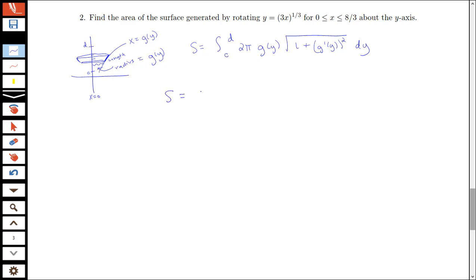So we're going to have our surface area be an integral over our y bounds. So notice that if x is 0 here, y would also be equal to 0 if we have 3x to the 1/3. And when I have x is equal to 8/3, I'm going to have y is equal to 3 times (8/3) to the 1/3. So it looks like my y will be the cube root of 8 or y will be 2.